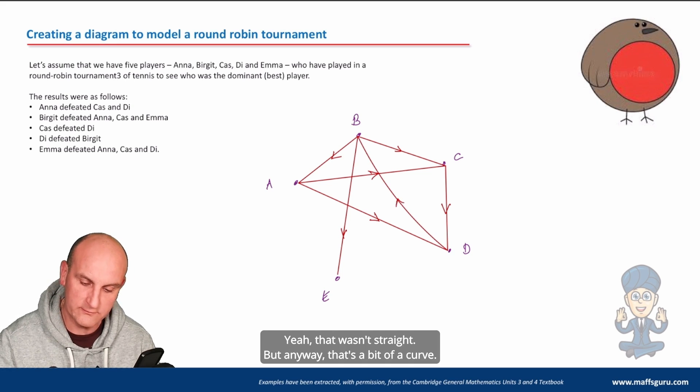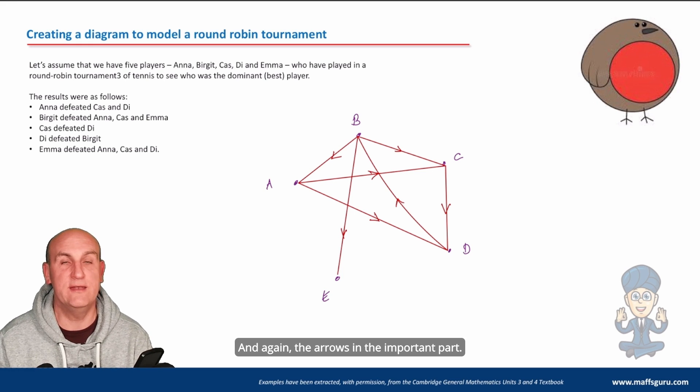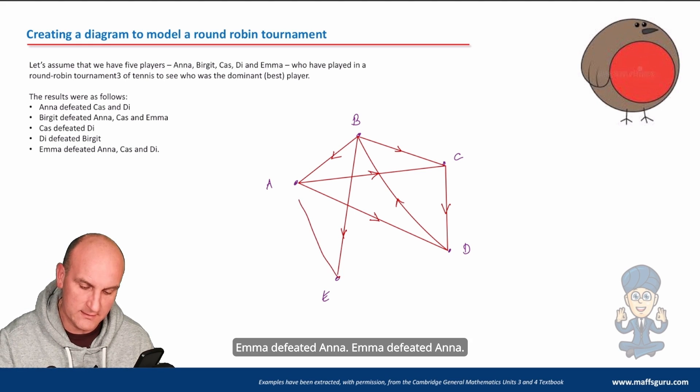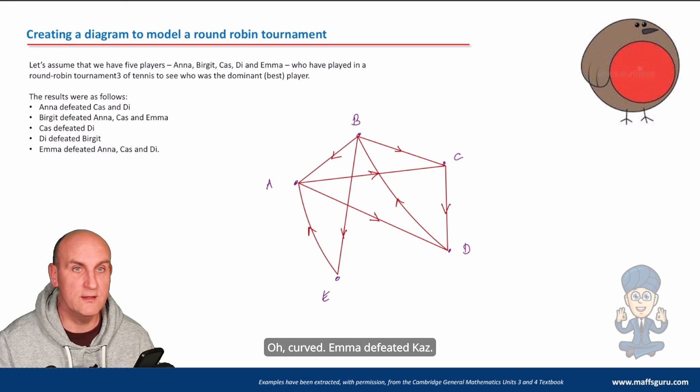Kaz defeated Dye. Kaz defeated Dye. There we go - Dye. How are you? Very good. And Dye defeated Burgett. Oh my goodness, poor Burgett. Oh, that wasn't straight, but anyway - that's a bit of a curve. Again, the arrow is the important part.